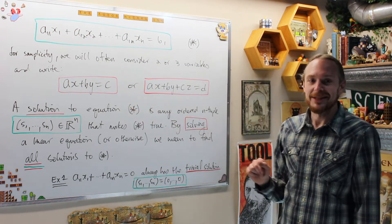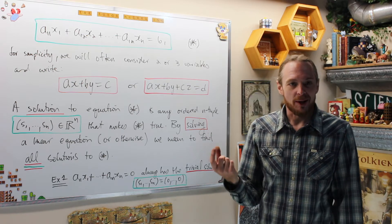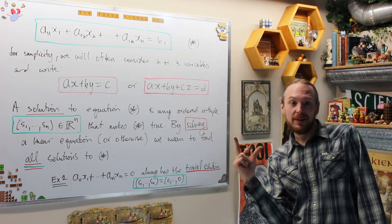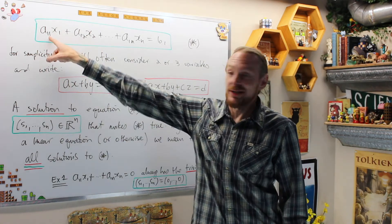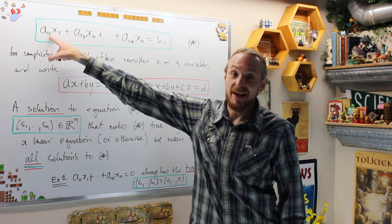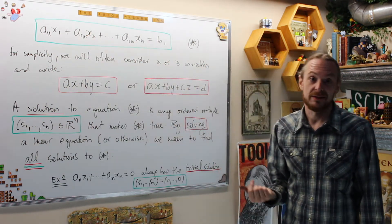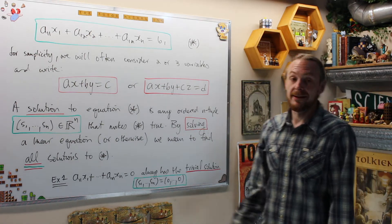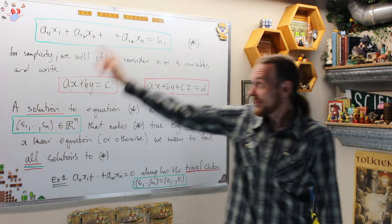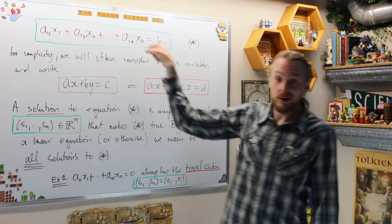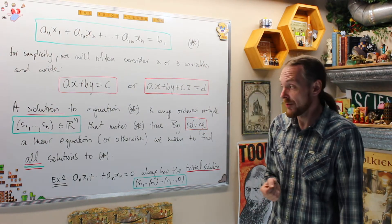A solution is any ordered N-tuple. A pair is a two-tuple; a triplet is a three-tuple. They have to be ordered — S1 goes with A11, and S2 goes with A12. You can't permute them. So it's an ordered tuple which makes the equation true: when you put them in the correct order with the right coefficients, you get the value B1.